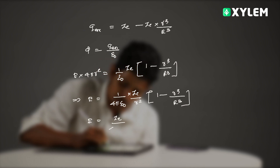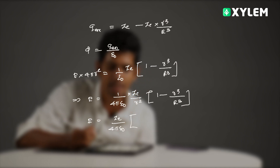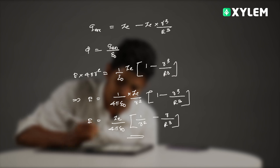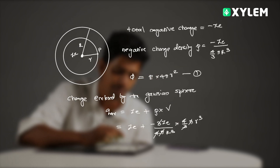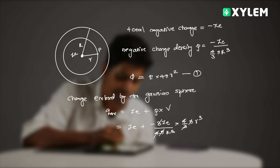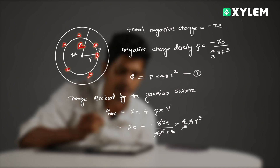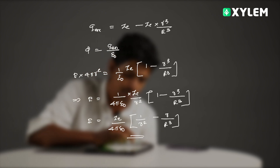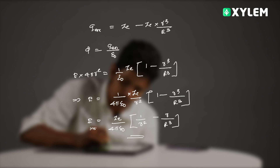We can simplify: E equals ZD divided by 4π ε₀ times, taking r² inside the bracket, giving (1/r² minus small r divided by capital R cubed). This is the final expression for the electric field at any point inside the sphere of radius capital R.